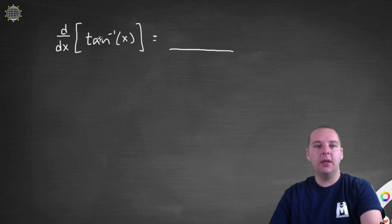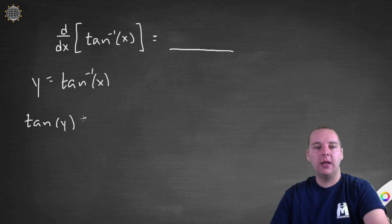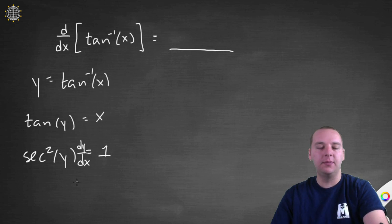Alright, one more to do real quick. Derivative of tan inverse. Let's do this one the same way. We'll have y equals tan inverse of x. So tan of y equals x. Derivative for tangent is secant squared y. Derivative of x is 1. And forgive me, I forgot my dy dx in here from implicit differentiation.